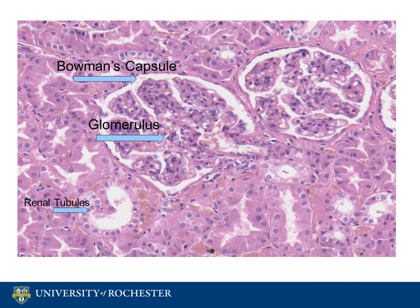The renal corpuscle is made up of a filtering unit called the glomerulus and the Bowman's capsule, which collects the filtrate. The afferent arteriole carries blood to the glomerulus while the efferent arteriole carries blood away. Histologically, we can sometimes see these arterioles but not always. When we do, they have a structure similar to other arterioles with a thin endothelial layer.